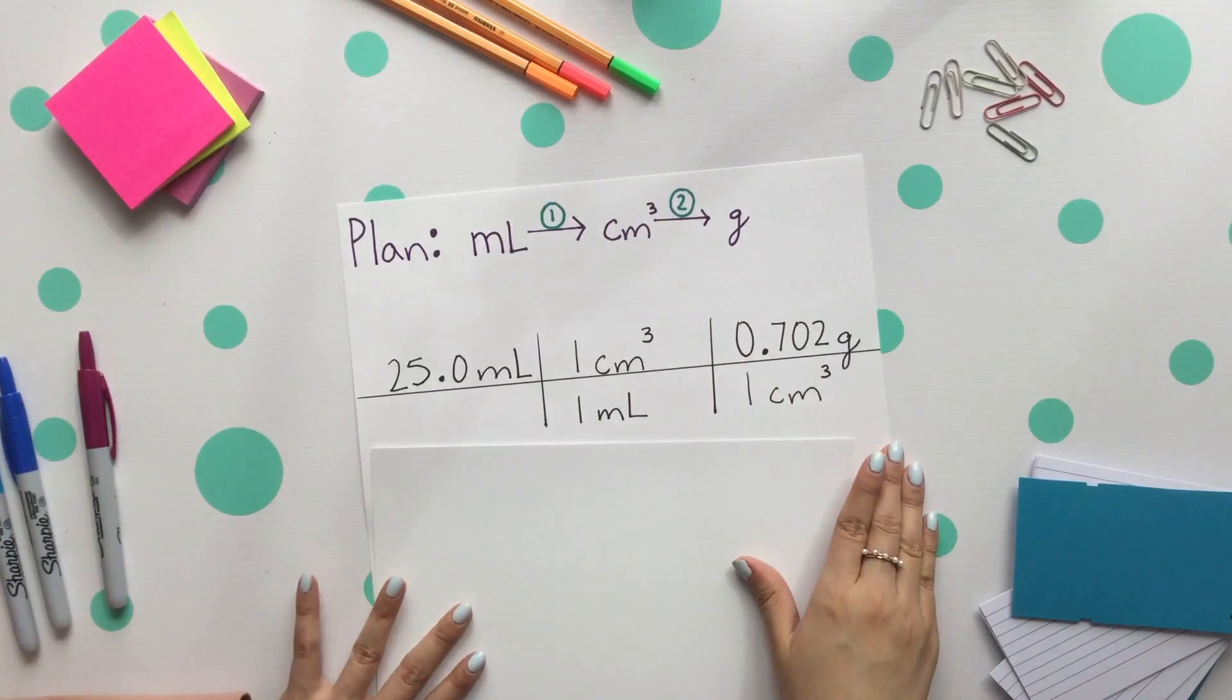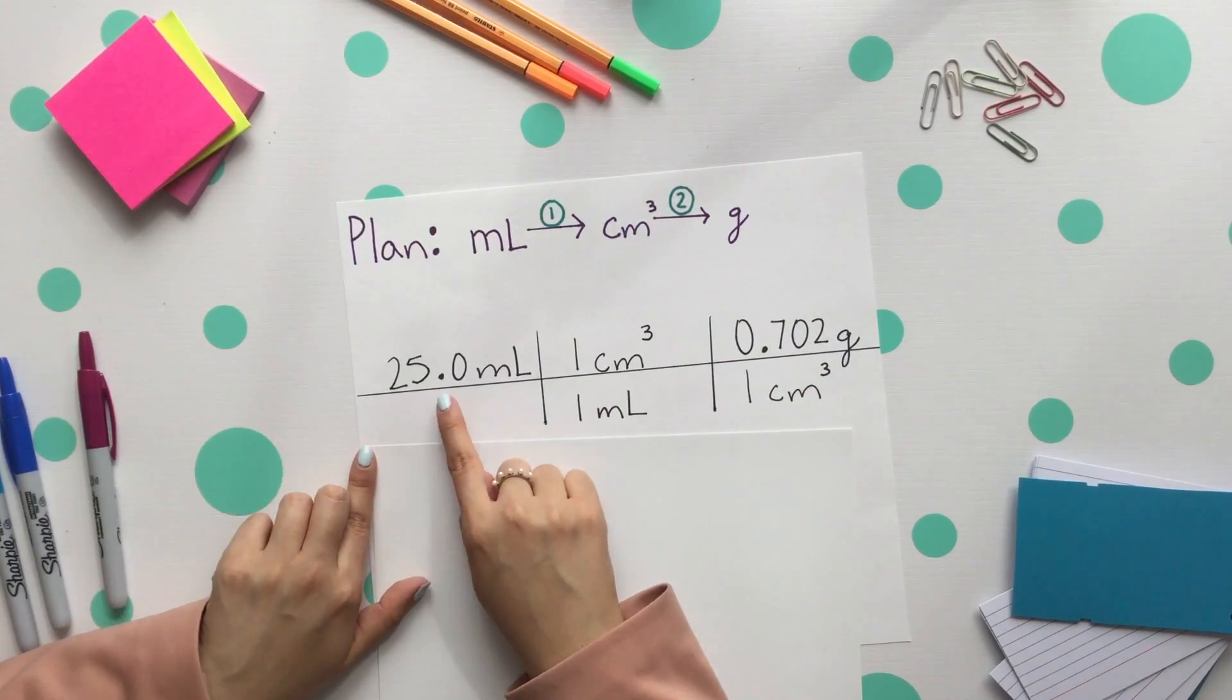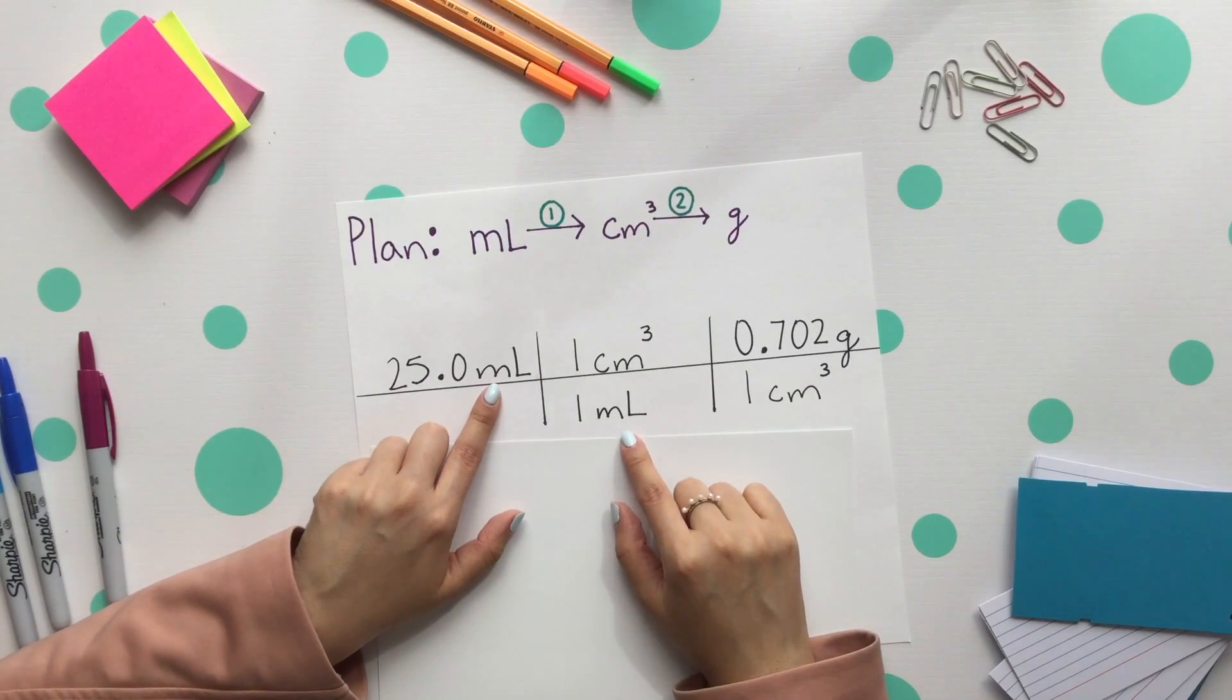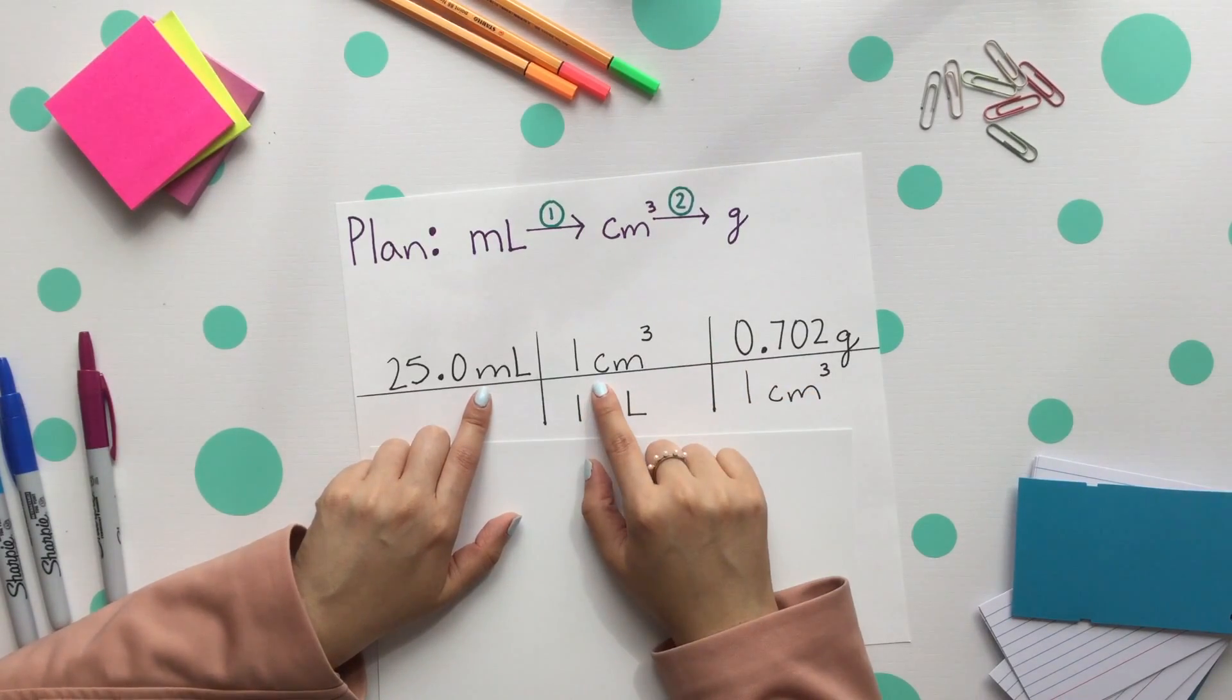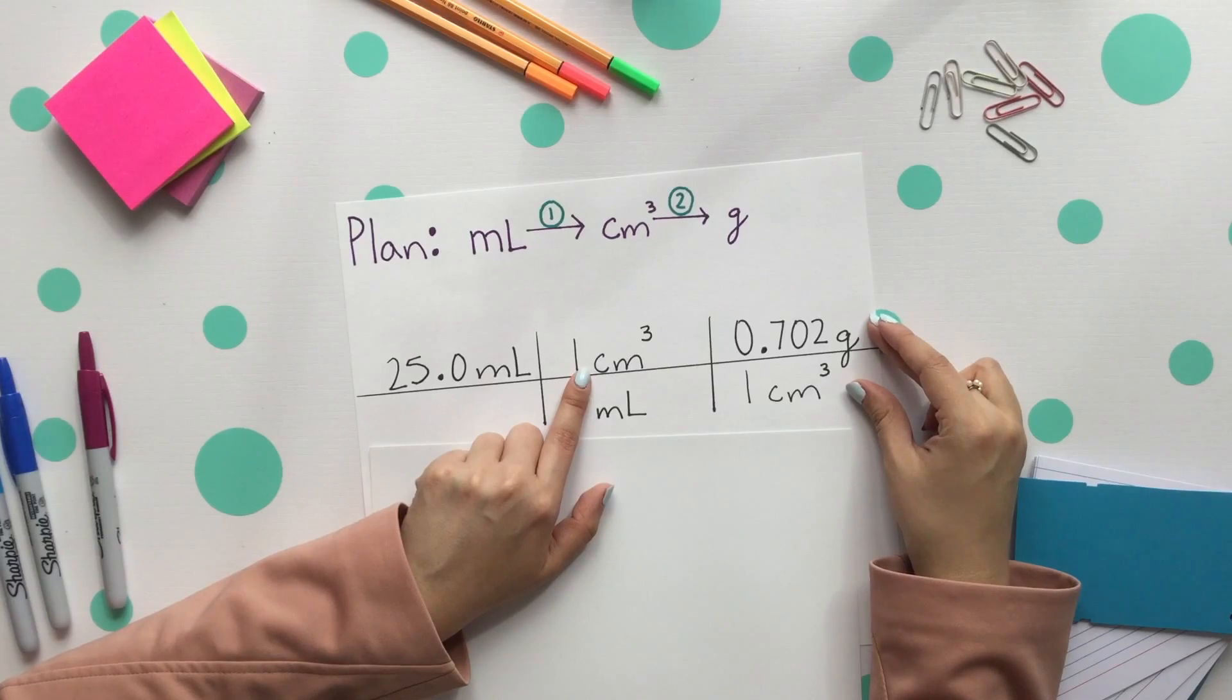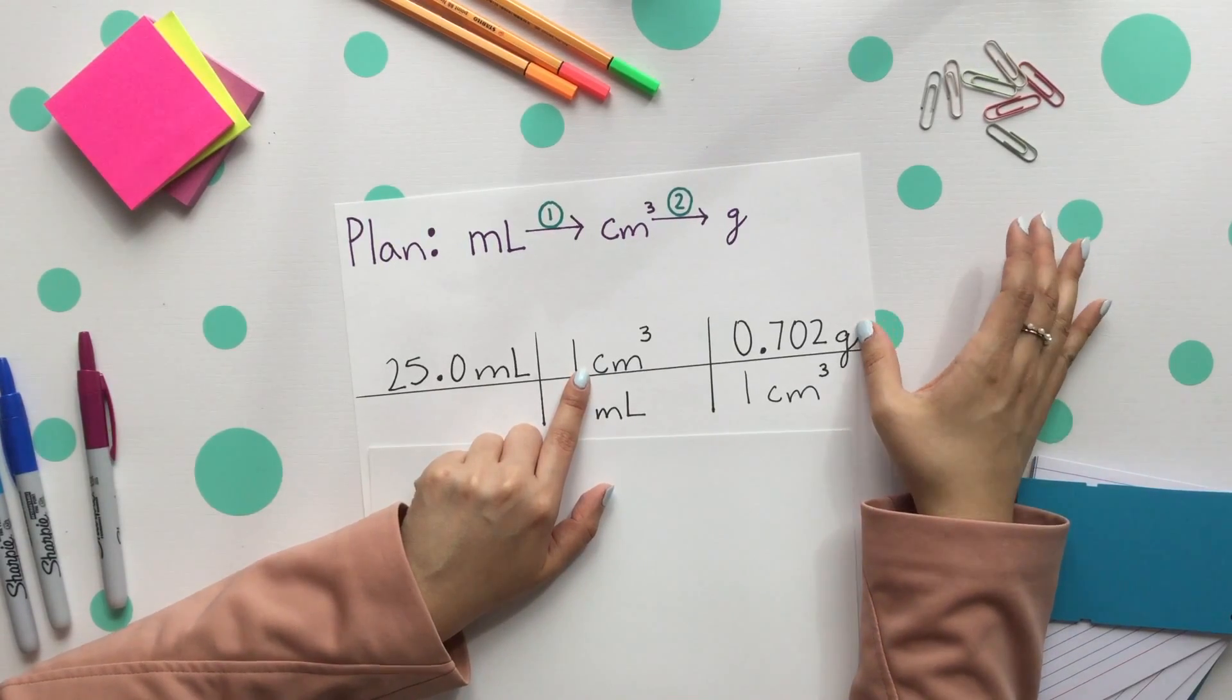Our proper setup: placing our given in the beginning, as always, 25.0 milliliters. Align the milliliters across from each other so they can cancel out. Next, we'll use our first conversion factor and we'll get to cubic centimeters. Align those units once again so they can cancel out. And finally, placing our density at the very end so we'll get our unit that we're looking for, which is grams.